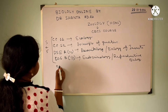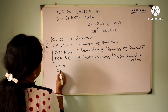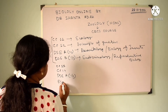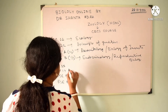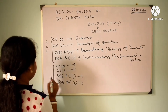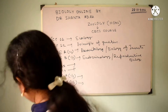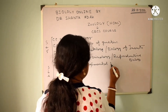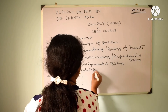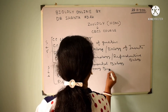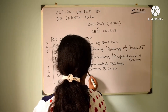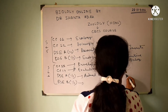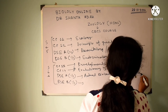Next, Semester 6: CC13 covers Developmental Biology, and CC14 covers Evolutionary Biology. DSE options include Animal Biotechnology or Animal Cell Biotechnology, and another DSE option of Animal Biotechnology or Animal Cell Biotechnology.